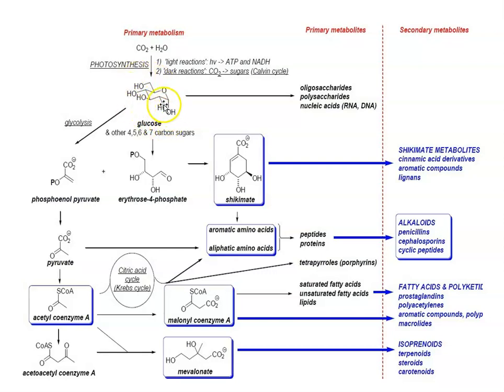Glucose is also the starting material of important primary pathways. Three types of primary pathways are: glycolysis, the pentose phosphate pathway, and the shikimate and aromatic pathways. Secondary pathways are also of three types: hydrolyzable tannin synthesis, terpenoid volatile synthesis, and the phenylpropanoid pathway.